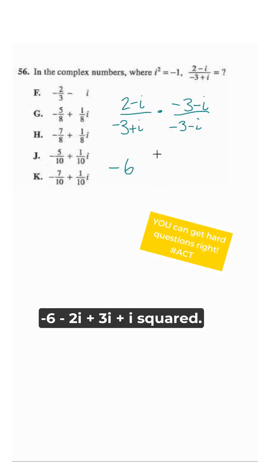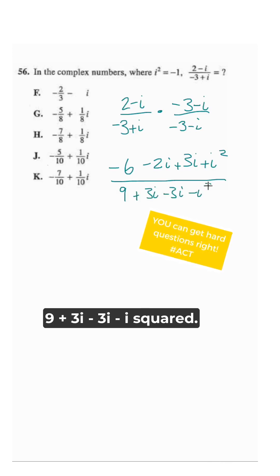FOIL on the top: we get negative six minus two i plus three i plus i squared. In the denominator: nine plus three i minus three i minus i squared.